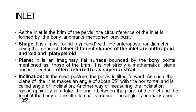The plane of the inlet is the imaginary flat surface bounded by the bony points of the brim. In the erect posture, the pelvis is tilted forward; the plane of the inlet makes an angle of about 55 degrees with the horizontal, called the angle of inclination. Another way of measuring the inclination radiographically is to take the angle between the plane of the inlet and the front of the body of the fifth lumbar vertebra — this angle is normally about 135 degrees.